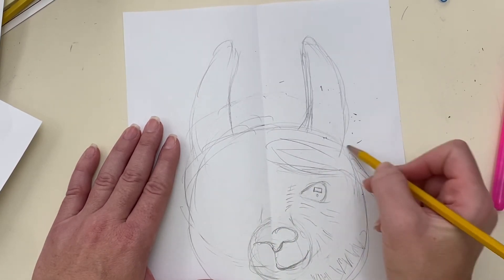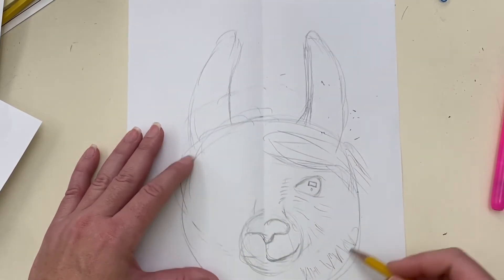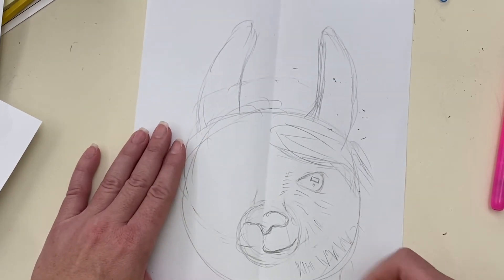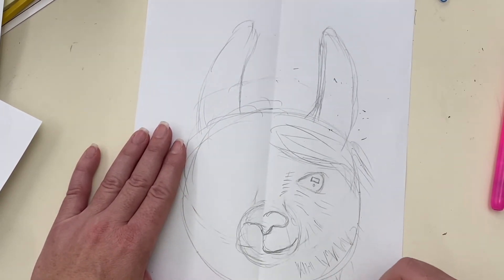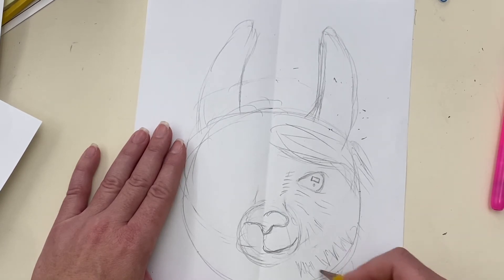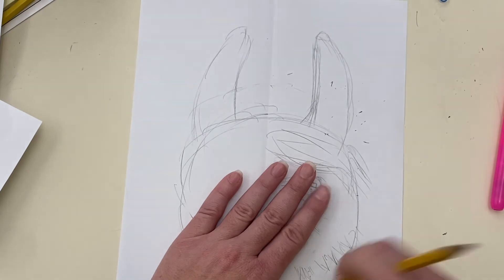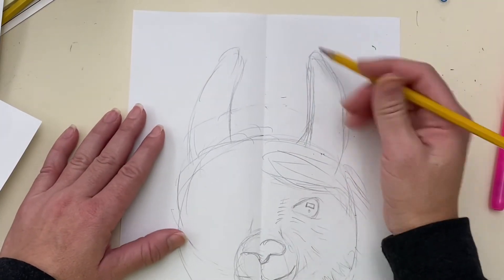And then they start kind of coming down. He does have hair right here. You want to draw a neck on your animal. On his ears.